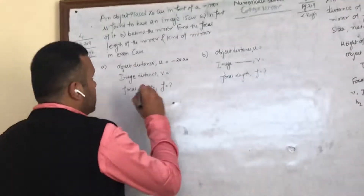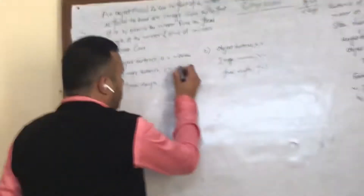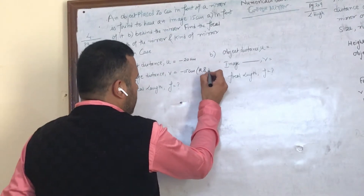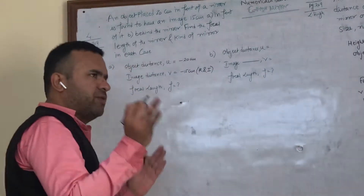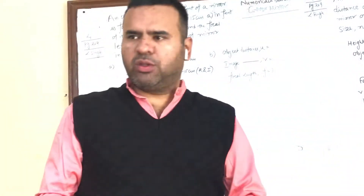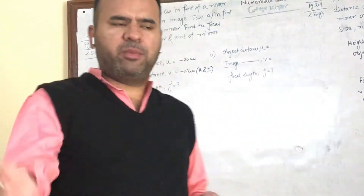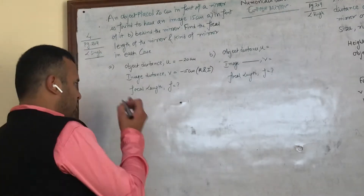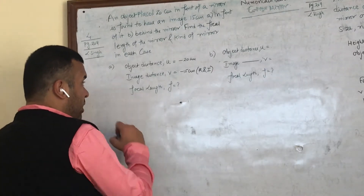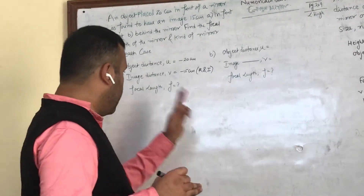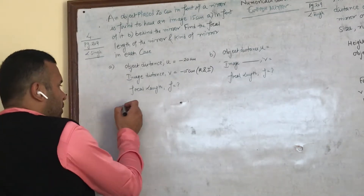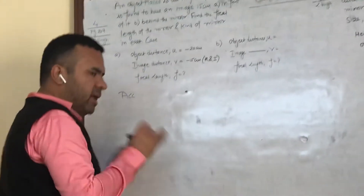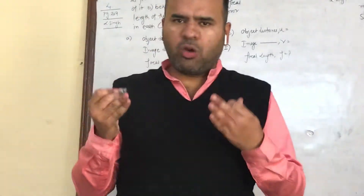For part A: image distance — because the image is in front, it is real and inverted. Images in front of the mirror are real and inverted. In the sign convention table, for real and inverted images, v is negative. So v = -15. The focal length we need to find. Since the image is real and inverted, v is negative. If the focal length comes out negative, then it is a concave mirror; if positive, it is a convex mirror.